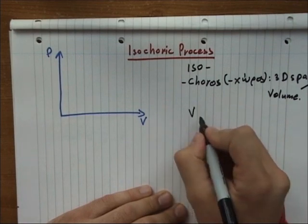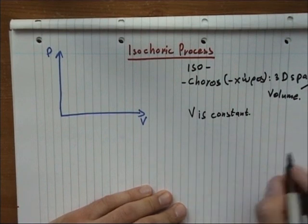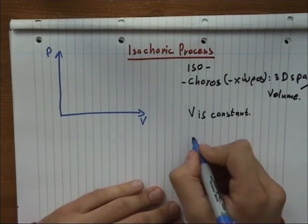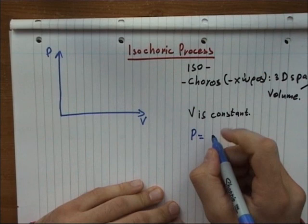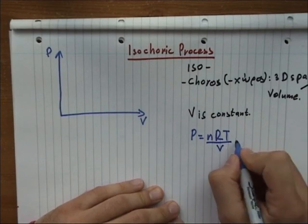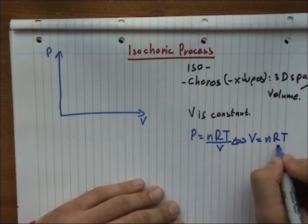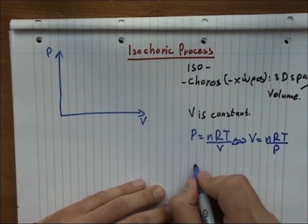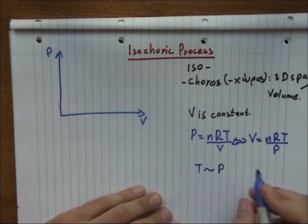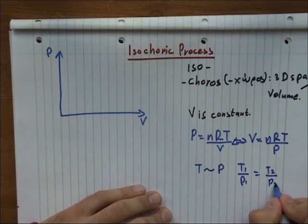In this process, the volume is kept constant. From our gas law, we have that P equals nRT over V, or alternatively V equals nRT over P. This means the temperature is proportional to the pressure of the gas, and that T1 over P1 equals T2 over P2.